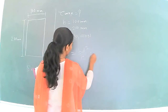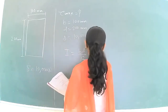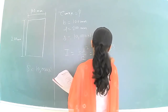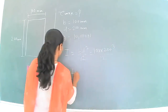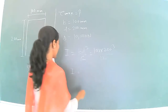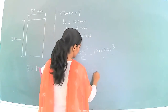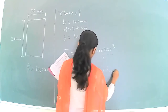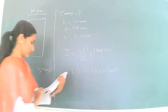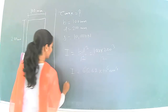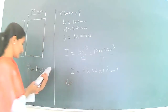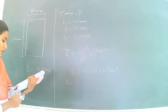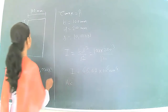We have to find the moment of inertia. The moment of inertia is bd³/12, that is 100 into 200 cubed divided by 12. This gives the moment of inertia as 66.67 times 10 to the power 6 mm to the power 4.